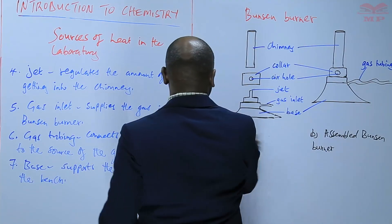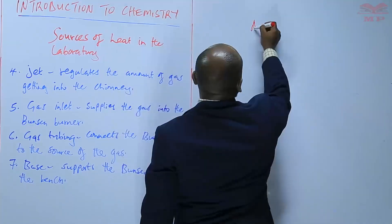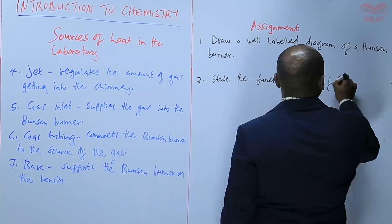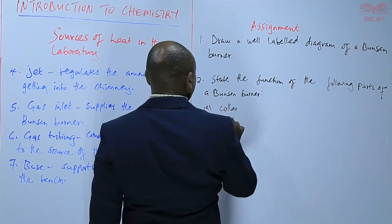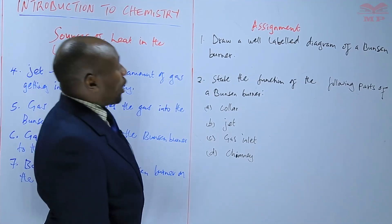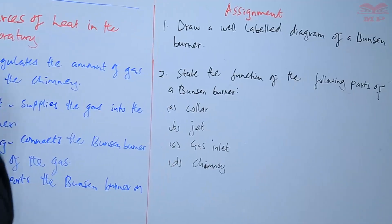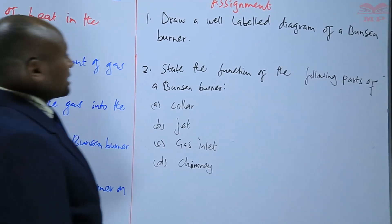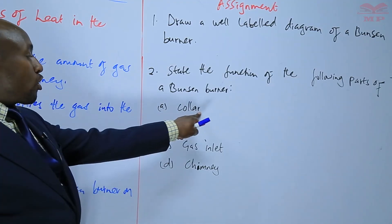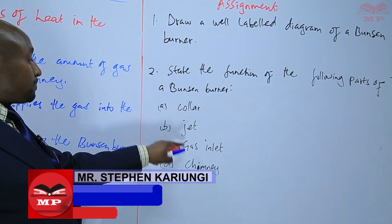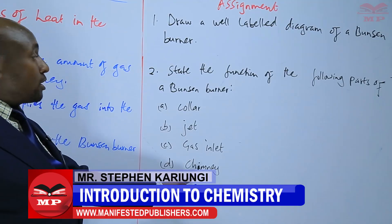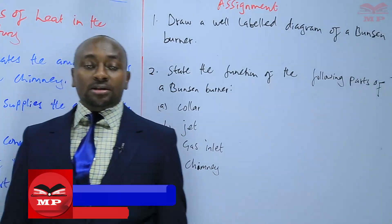We are going to have an assignment. Question one: draw a well-labeled diagram of a Bunsen burner. Question two: state the function of the following parts of a Bunsen burner — (a) collar, (b) jet, (c) gas inlet, and (d) chimney. We'll stop there and continue next time. See you then.